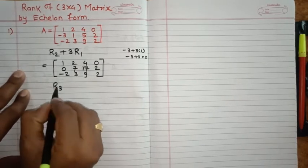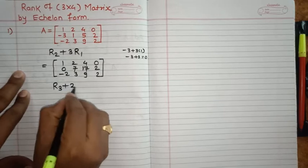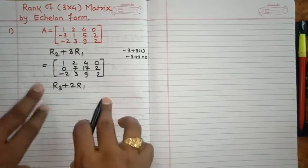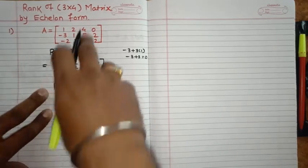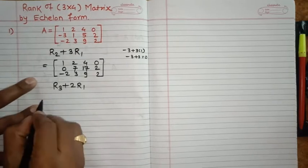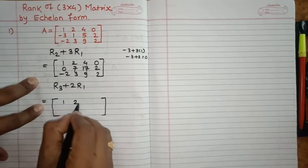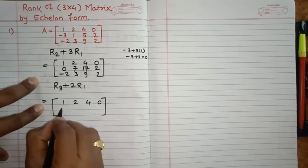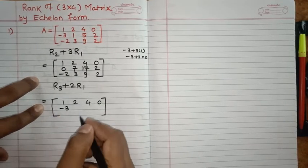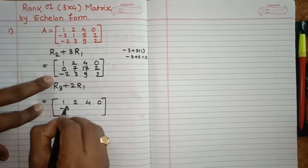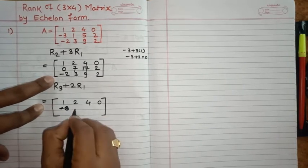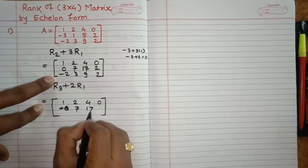transformation as R3 plus 2 into R1. Now only row 3 will change, remaining rows will be as it is. So write down these rows as it is: 1, 2, 4, 0, and 0, 7, 17, 2.